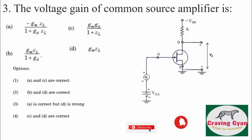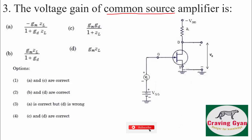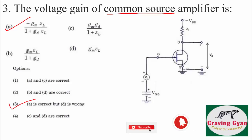Third question: the voltage gain of the common source amplifier. We know the voltage gain of a common source amplifier is negative because it has a phase shift of 180 degrees — even a common emitter configuration produces a phase shift of 180 degrees — so a minus sign is correct, option A is true, and option 3 is going to follow.